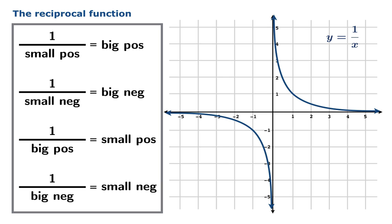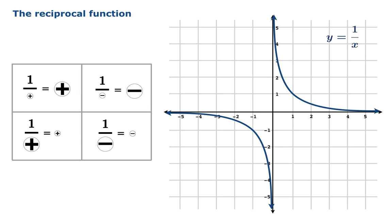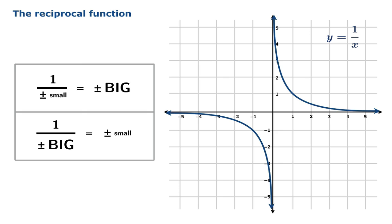You should somehow absorb this principle internally — whether it's memorizing a table, or something a little more symbolic, or any other way you want to do it. Maybe the best way is just to realize what the graph of 1 over x looks like and reproduce results as needed. That's probably the safest way.